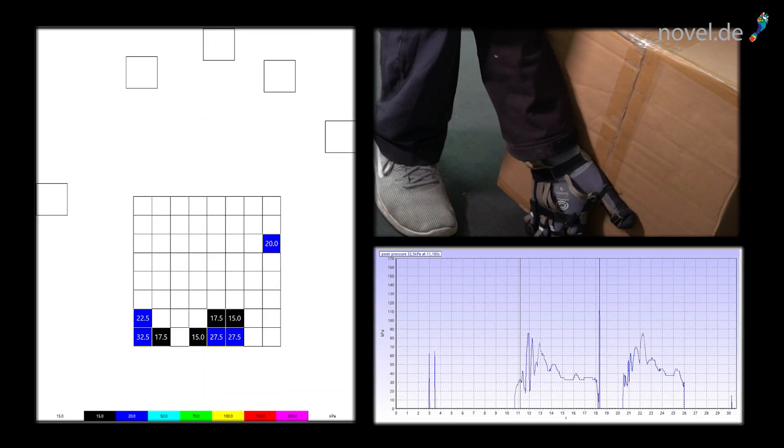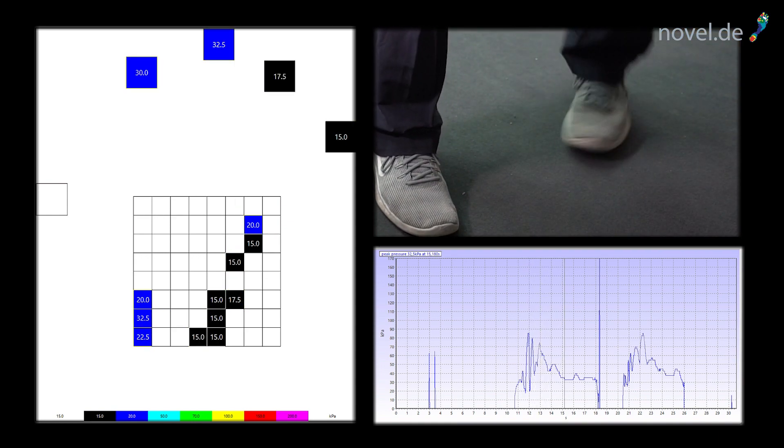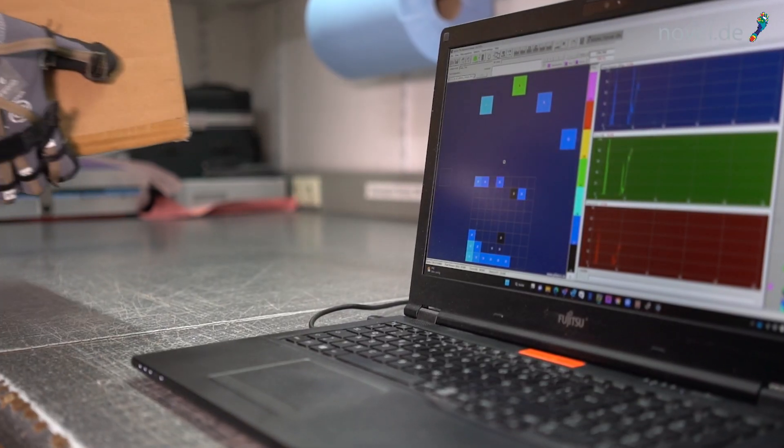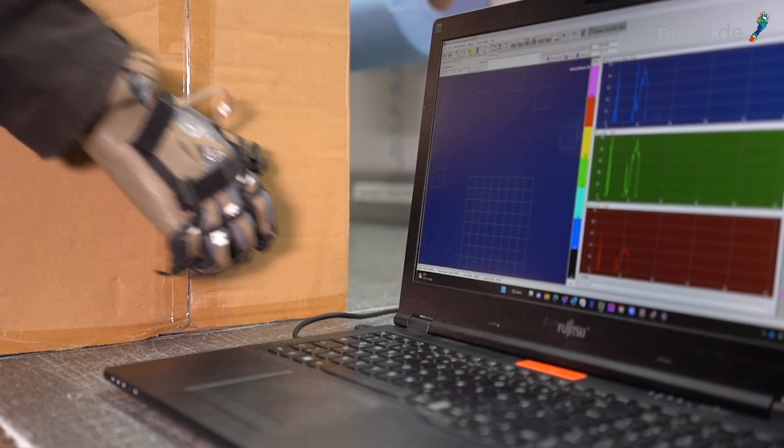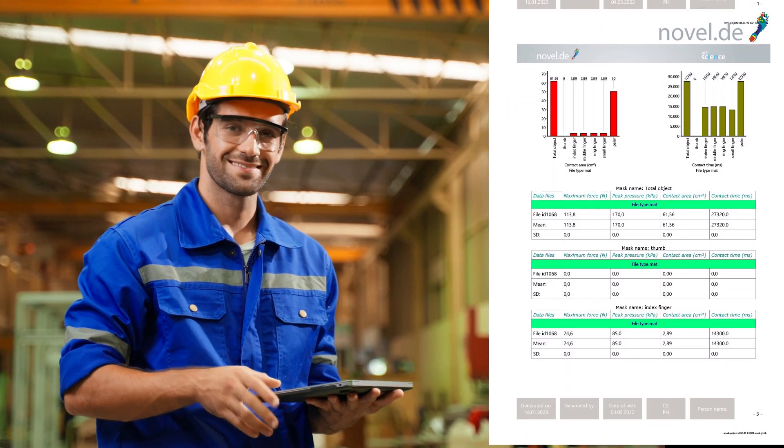The appliance glove monitors pressure values in real time during the activity. You can use a variety of options for data evaluation. Visualize activity cycles and peak pressures or generate predefined reports for individual analyses.